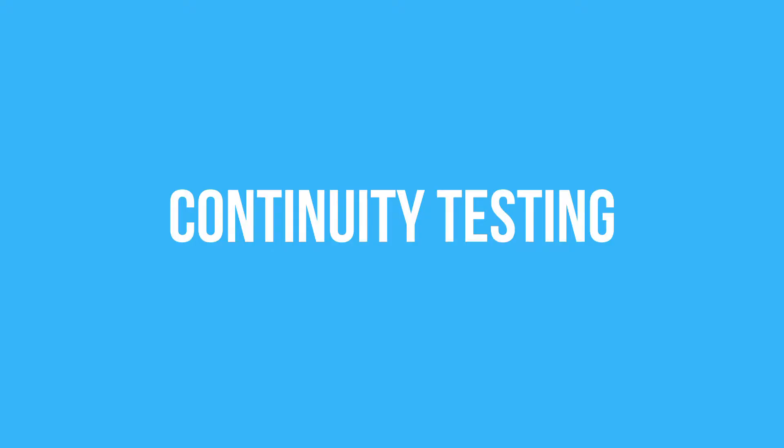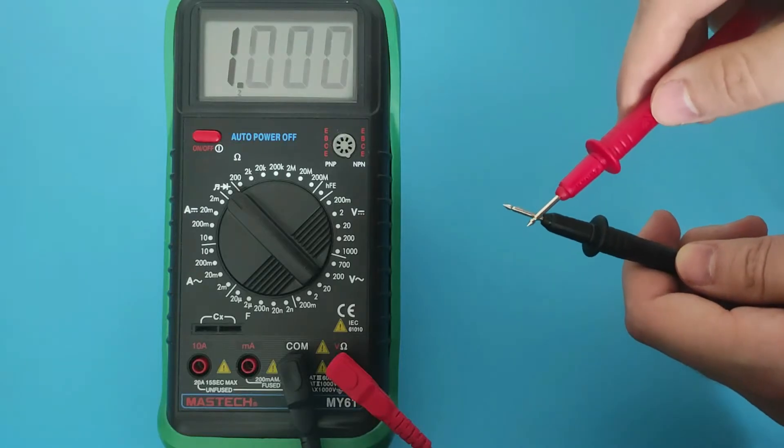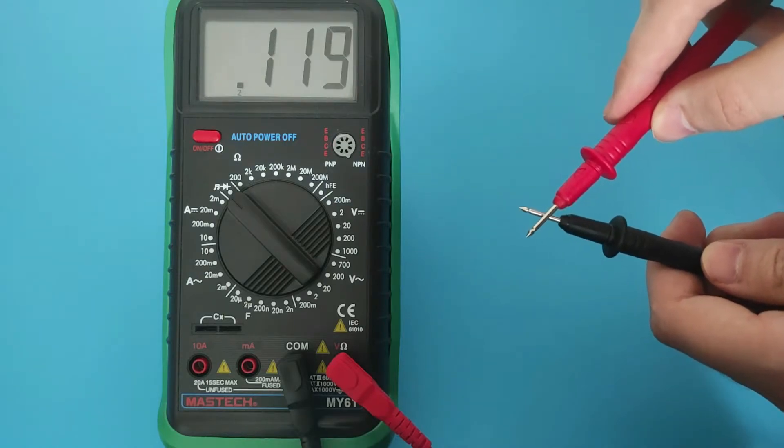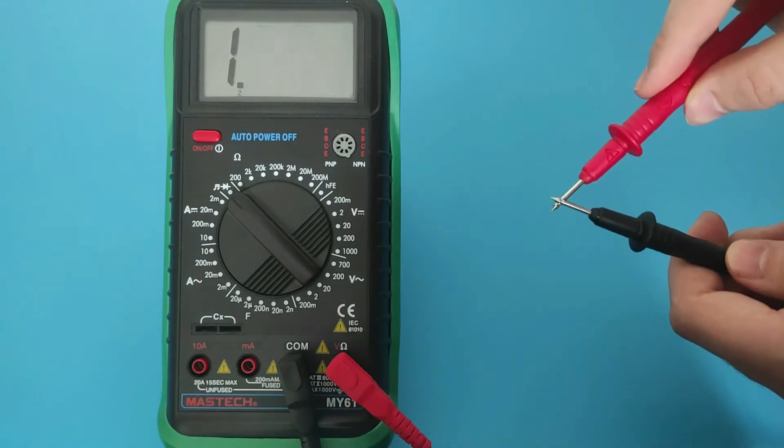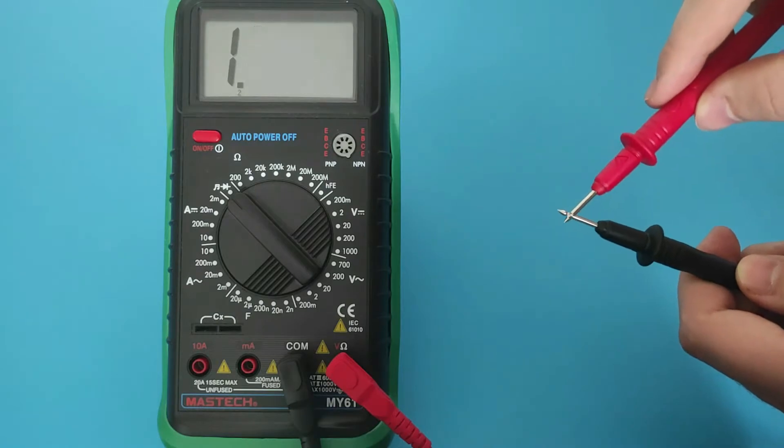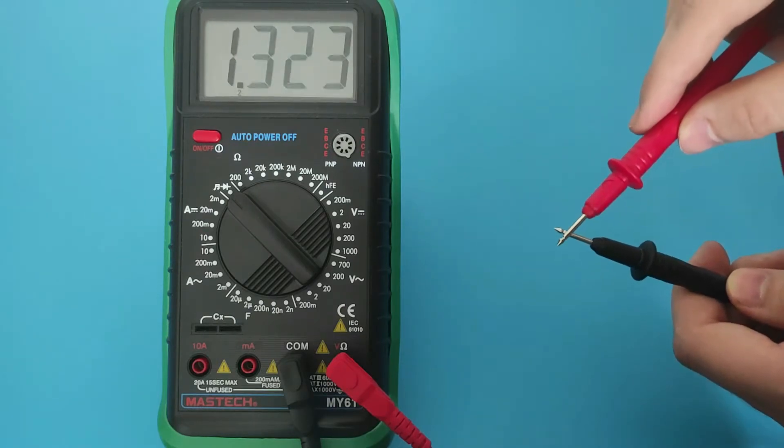Continuity testing gives a sound signal when two components are connected. The current passes between two points. If you can't hear the sound signal, some components are down because the power can't flow. This is the most helpful feature when you want to repair a device.